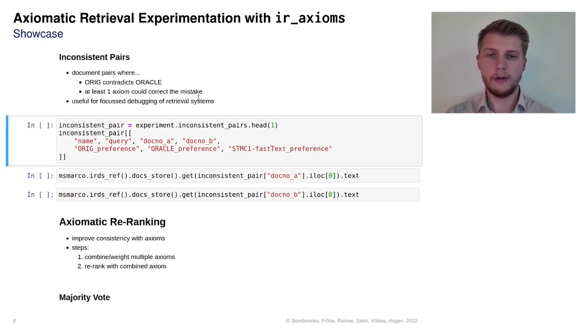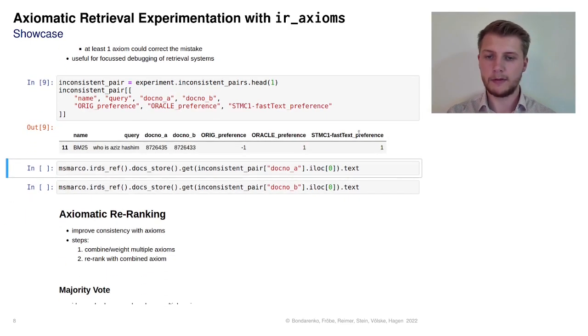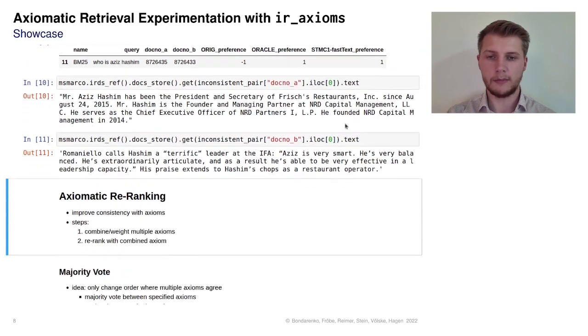We can also find inconsistent pairs, i.e., pairs where the original ranking contradicts the relevance judgments and where at least one axiom could correct the mistake. As with the preference data frame, we select just some of the data frame columns. In this example, the original ranking violates the oracle preference but the STMC1 axiom returns the correct preference. To debug a ranker, now it would be a good idea to look at the specific pairs being compared.